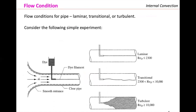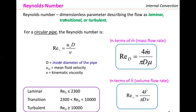Flow condition is defined with the Reynolds number: laminar for Re < 2300, transitional between 2300 and 10,000, and turbulent for Re > 10,000. Note that boundary conditions change — the velocity at the wall is zero because that is where the fluid most strongly feels the wall effect. For a circular pipe, the Reynolds number is the mean fluid velocity times the inside diameter divided by the kinematic viscosity.